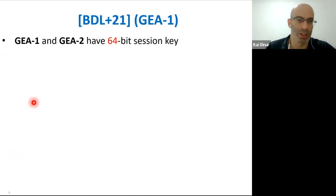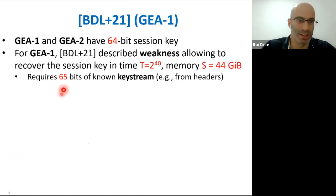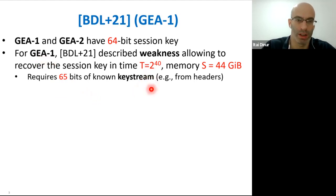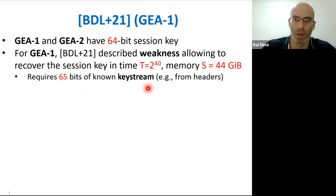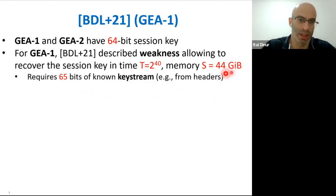GEA1 and GEA2 both have a 64-bit session key. Nevertheless, the previous Eurocrypt paper described a weakness that allows recovery of the GEA1 session key with time complexity only 2^40, given roughly 44 gigabytes of memory. The attack only required 65 bits of known keystream, which can typically be obtained from some known fixed headers, so it is quite practical. It was actually implemented.